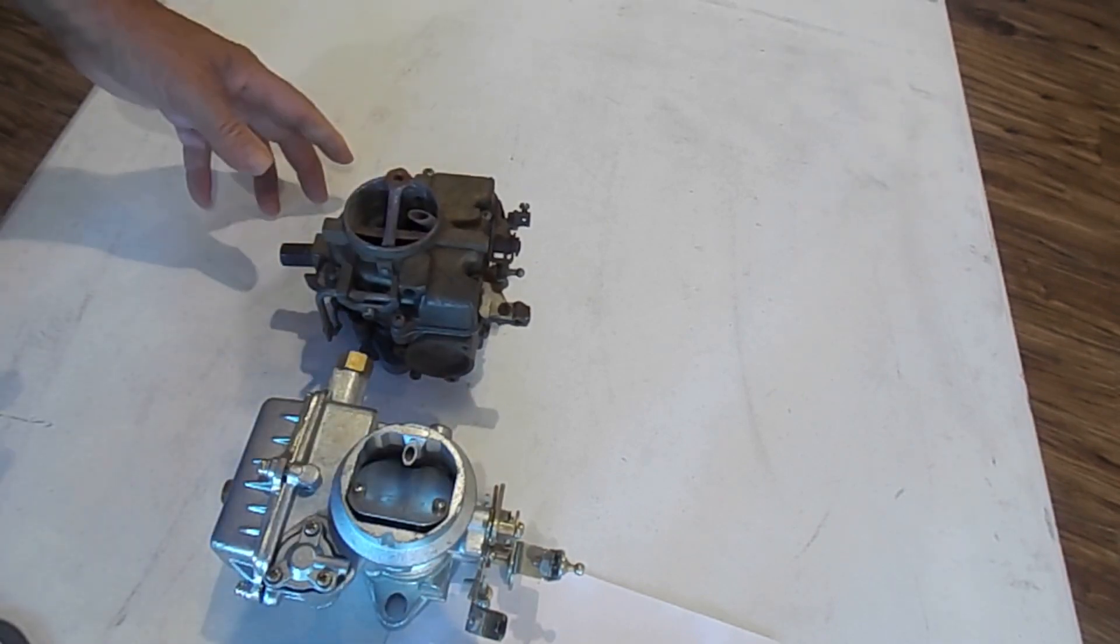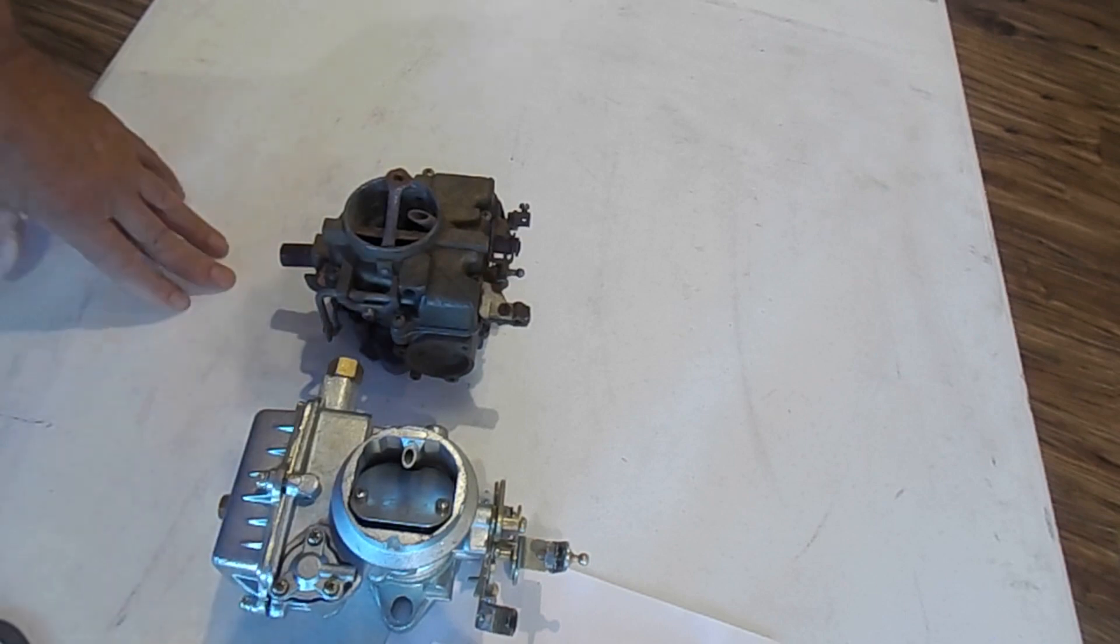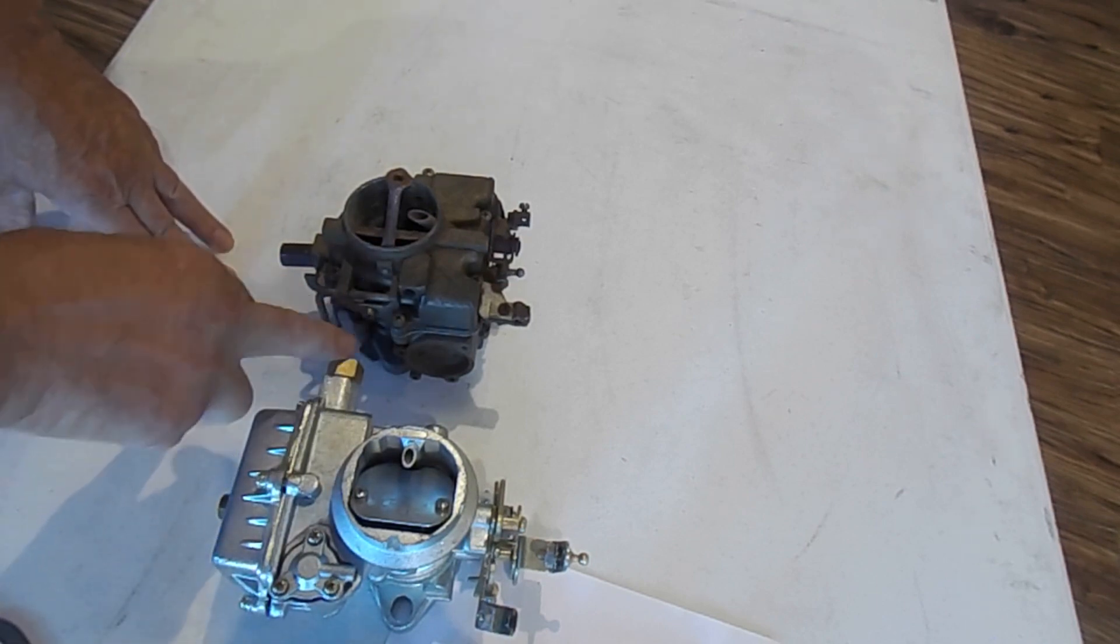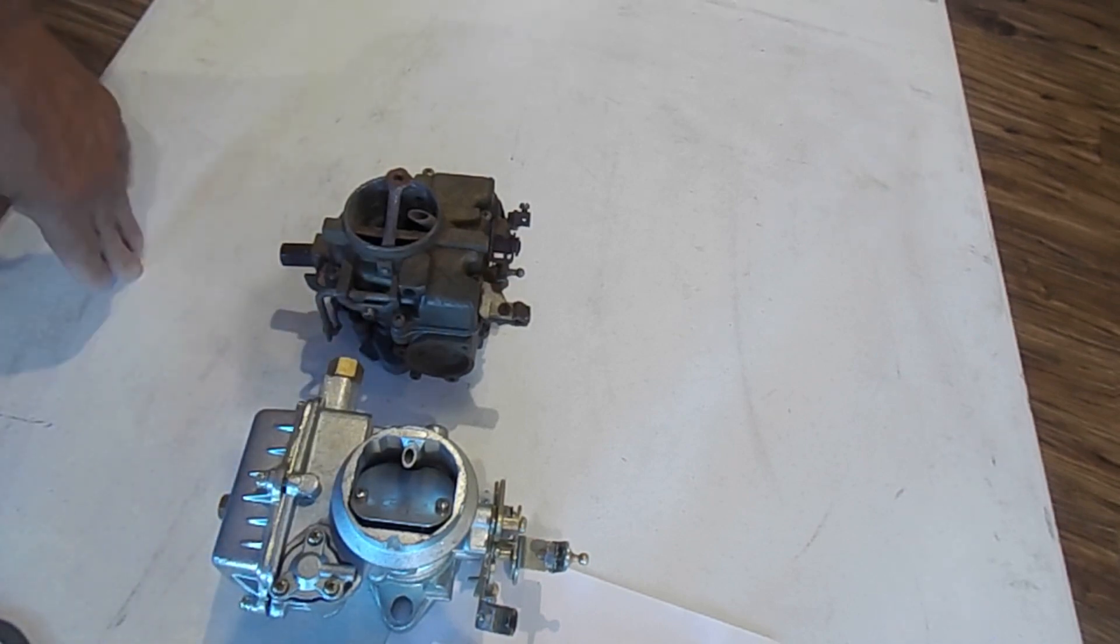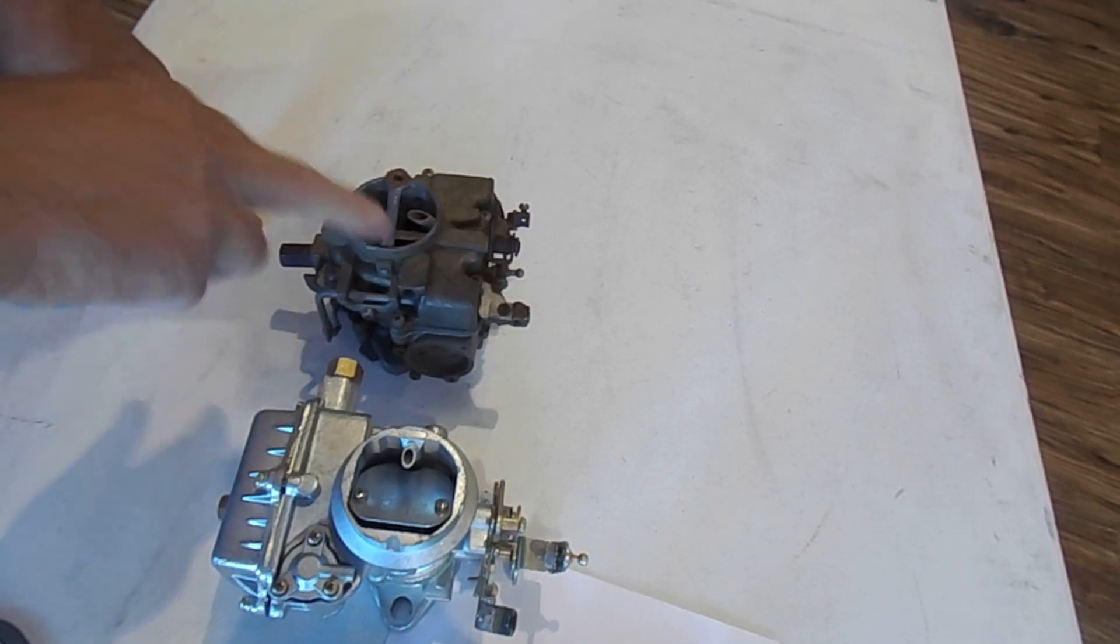You can see they're about the same height. Even with that adapter on it, it'll be about the same height, so that's not a problem. The fuel line's a little bit different. This one, the fuel line comes out the side, and on the 1940 it's coming out the front.